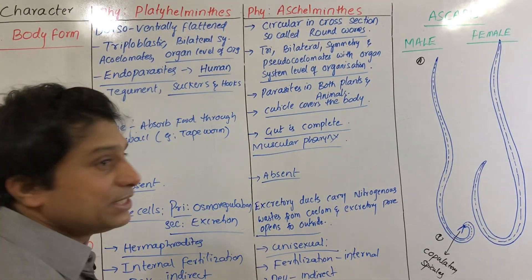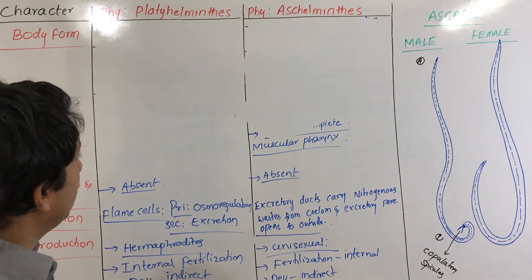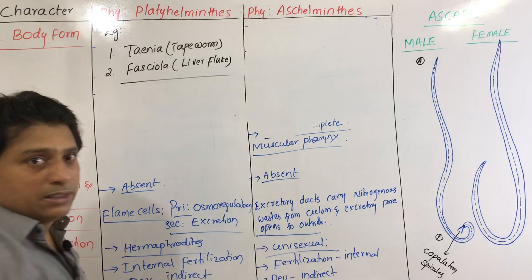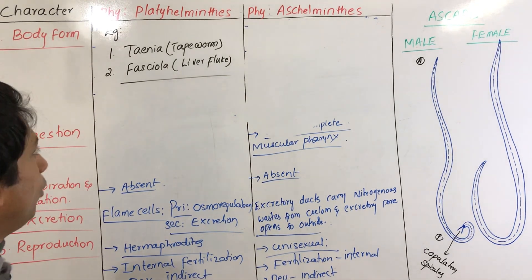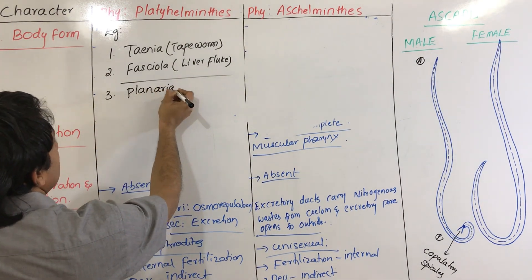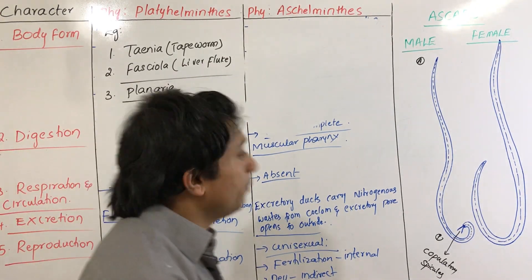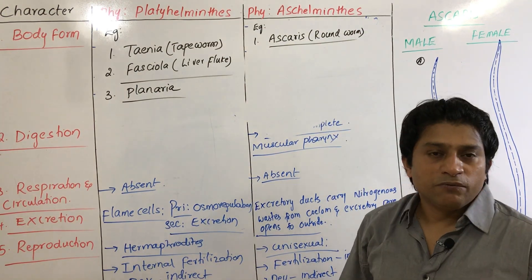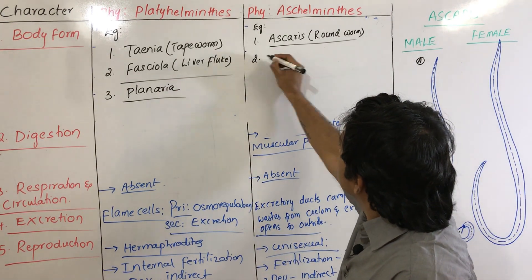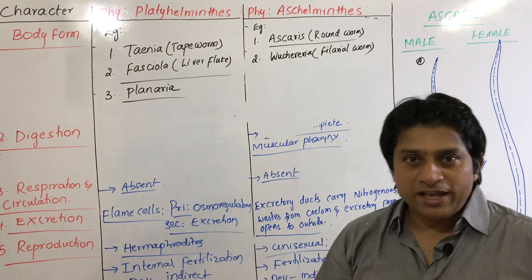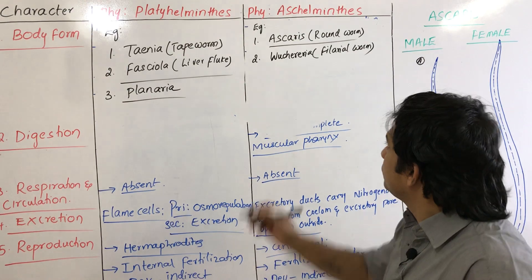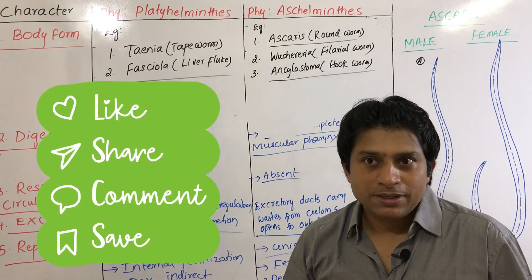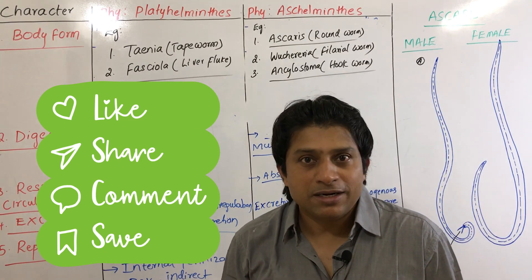Examples of Platyhelminthes: Taenia (tapeworm), Fasciola (liver fluke) — both parasites — and Planaria (free-living, called dugesia). Examples of Aschelminthes: Ascaris (roundworm, causes ascariasis), Wuchereria (filarial worm, causes filariasis or elephantiasis), and Ancylostoma (hookworm, causes ancylostomiasis). These are the characters of Platyhelminthes and Aschelminthes.